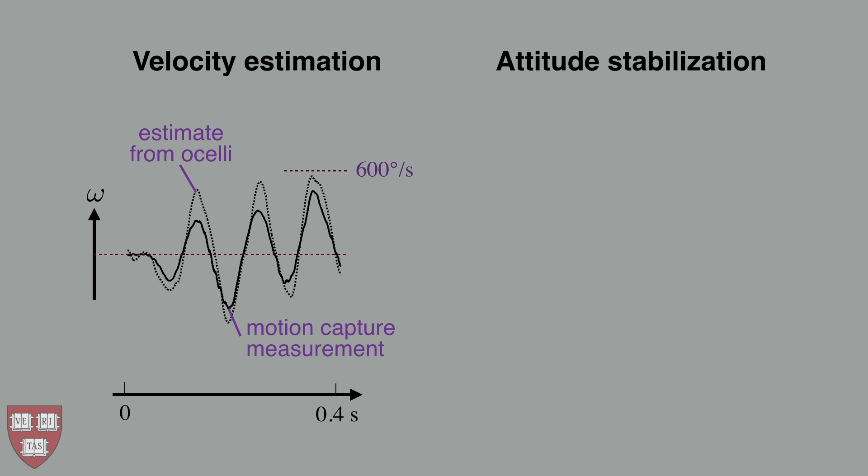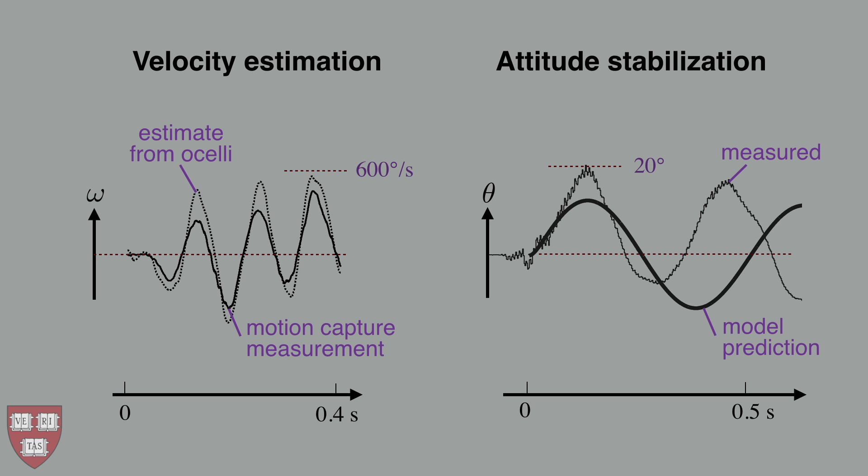We verified that the estimate of angular velocity derived from the ocelli is equal to its true value up to a constant and measurement noise, as predicted. We also verified that our model predicts the correct stability threshold for feedback gain.